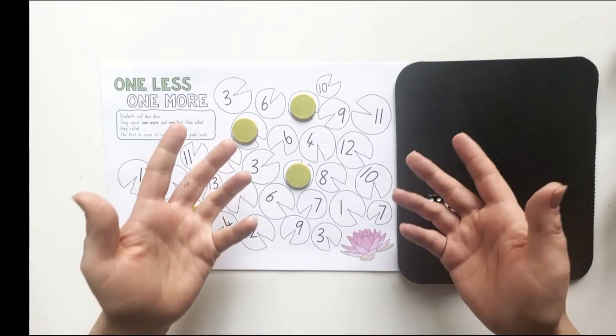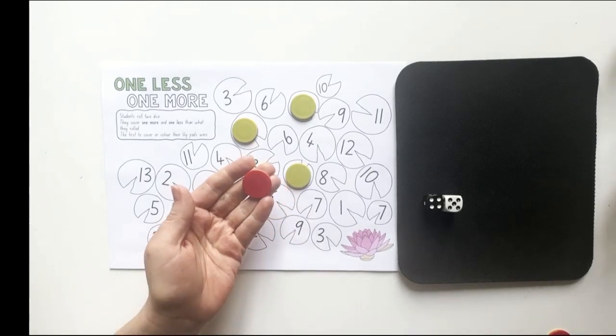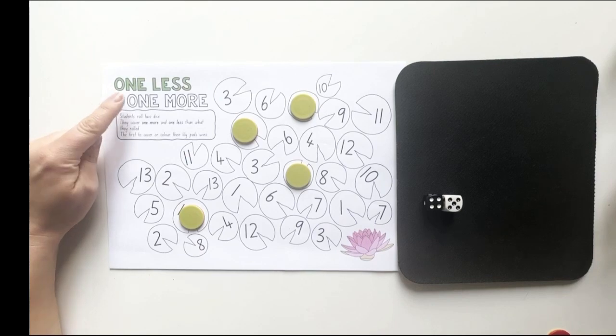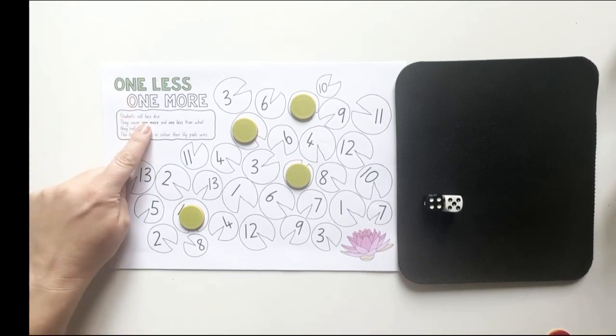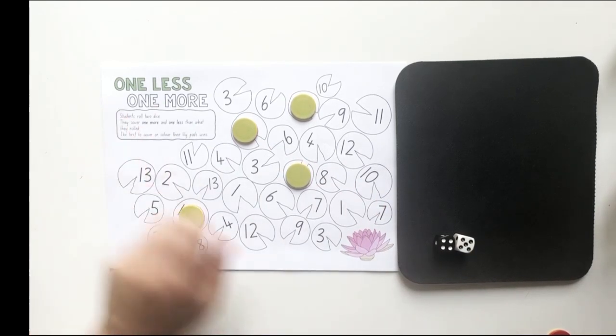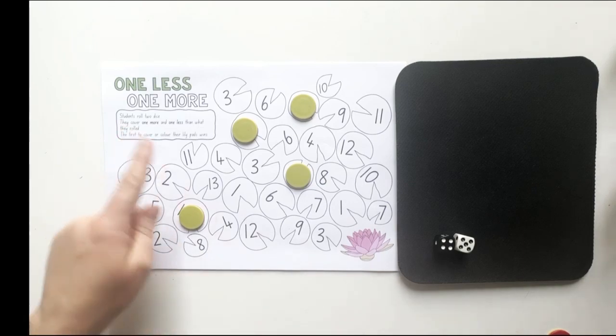Little mathematicians, you keep playing like this until you have all of your lily pads covered up, or as many lily pads as you can cover up in the time that you're allowed to play the game. You could also play with another player. You could use counters in a different color and at the end of the game or at the end of the playing time, see who covered up the most lily pads. We're working on numbers one less and one more. This version was using two dice. You might use another version where there's only one die or three dice. Have a go of playing one less and one more.